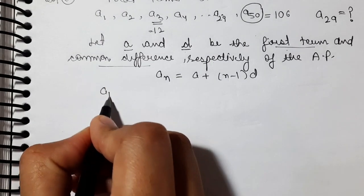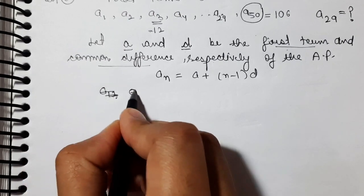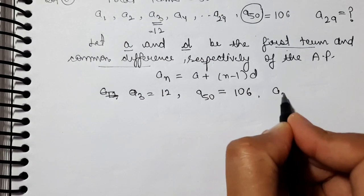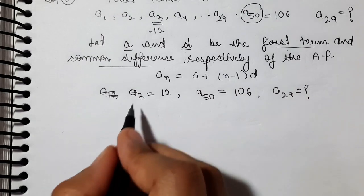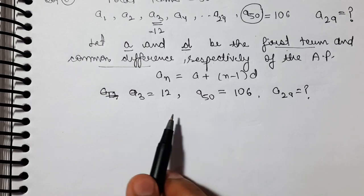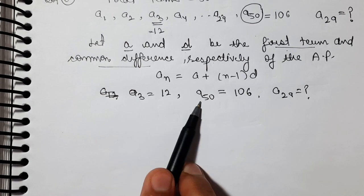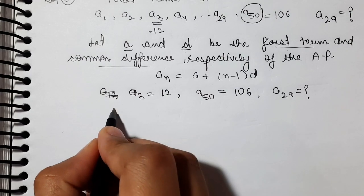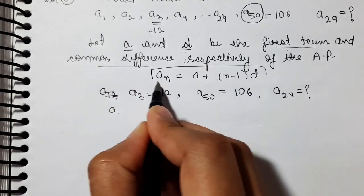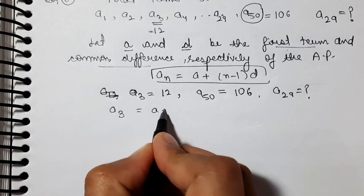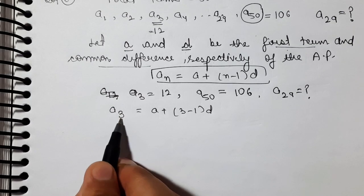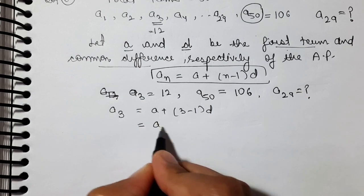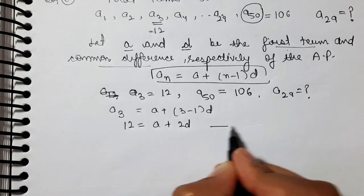Now what was given? The third term is 12, and the last term — that is the 50th term — is 106. We will find the 29th term. A3 = A + (3−1) × D = A + 2D = 12. This is our first equation. The second equation: A50 = A + (50−1) × D = A + 49D = 106.